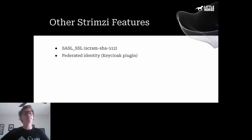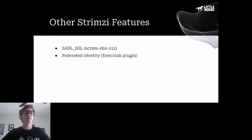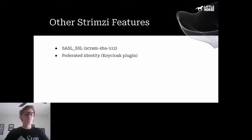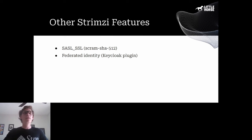There are a couple of other Strimzi features in the Kafka User CRD worth mentioning. You can create Kafka users with different authentication types: TLS (which generates a secret with TLS certificates), or SASL/SSL using the SCRAM-SHA-512 implementation (which creates a secret with username, password, and SASL JAAS config). There's also an OAuth plugin allowing you to use Keycloak as an identity provider. We decided TLS was the simplest approach for Little Horse Cloud.